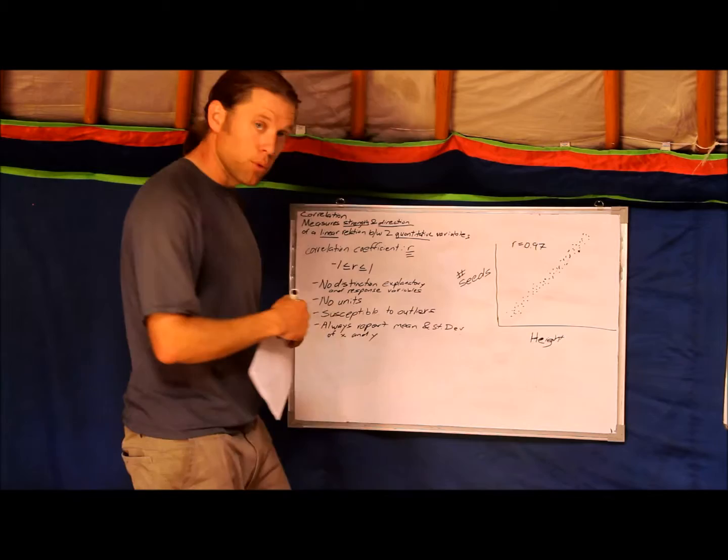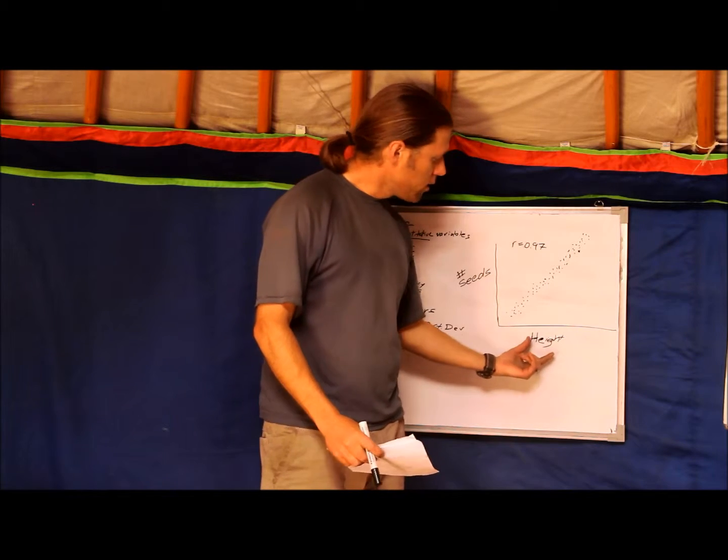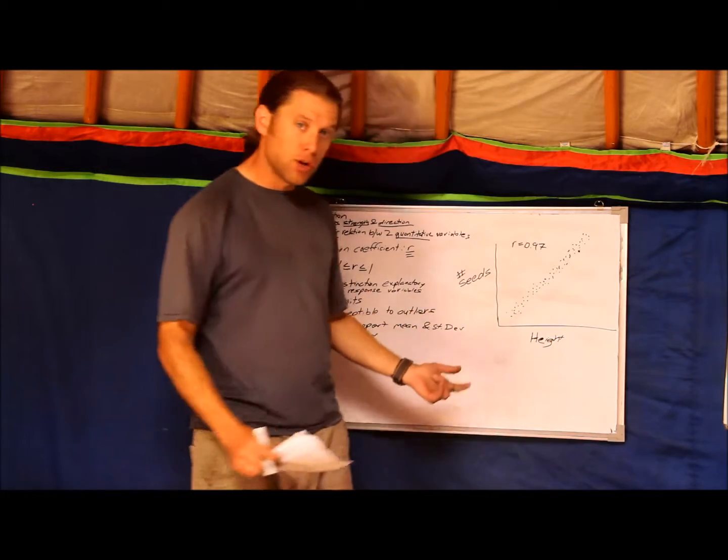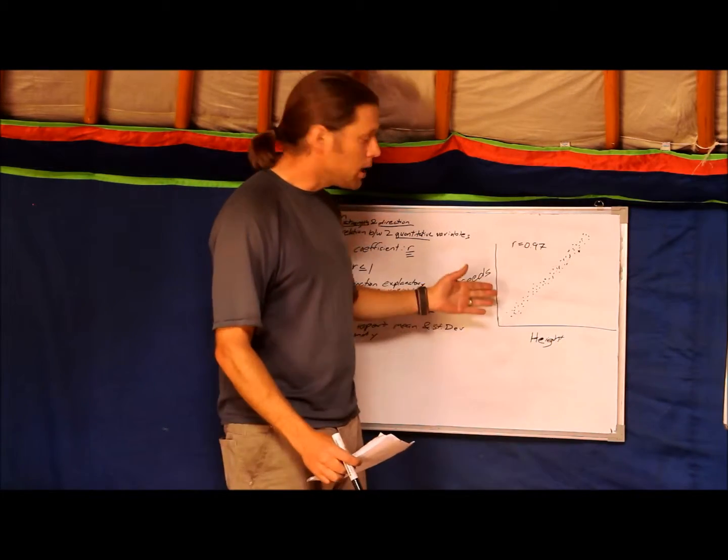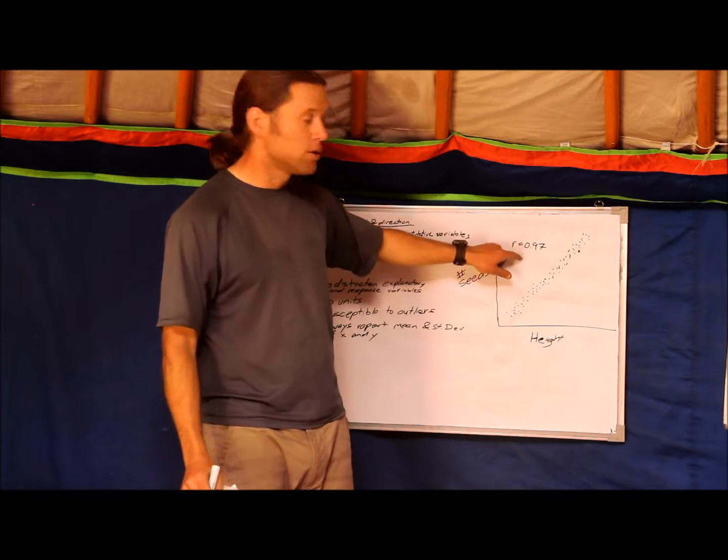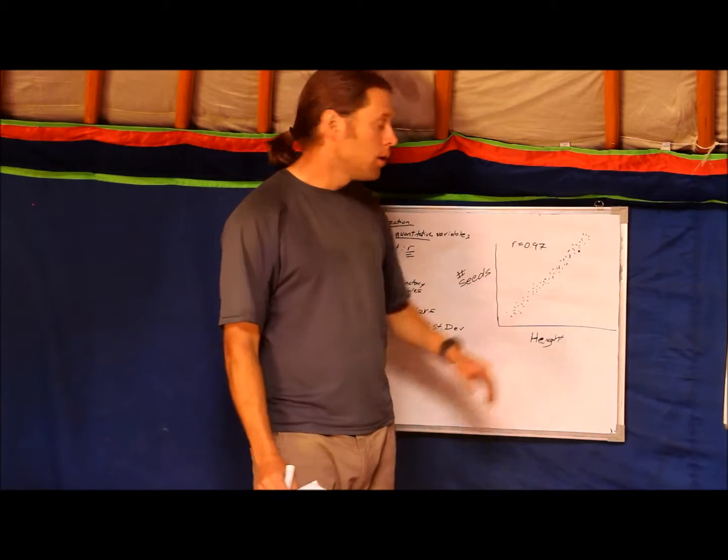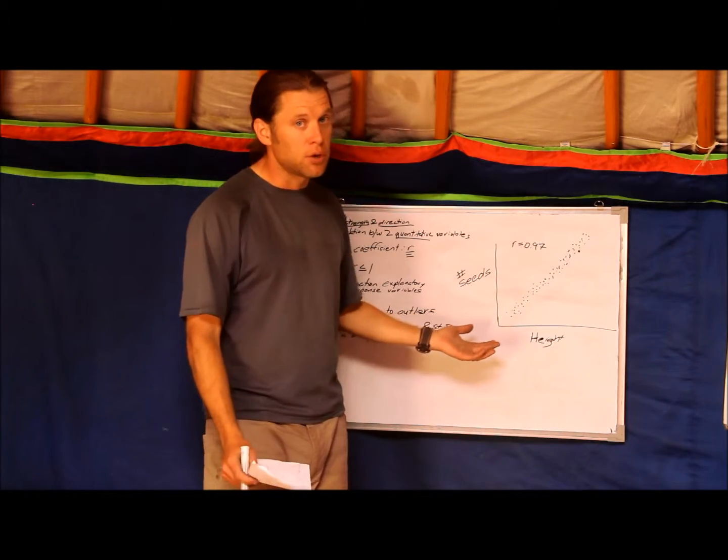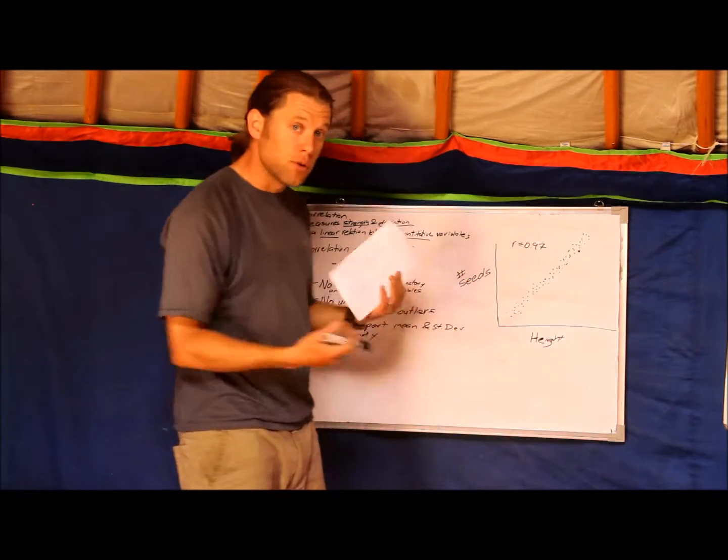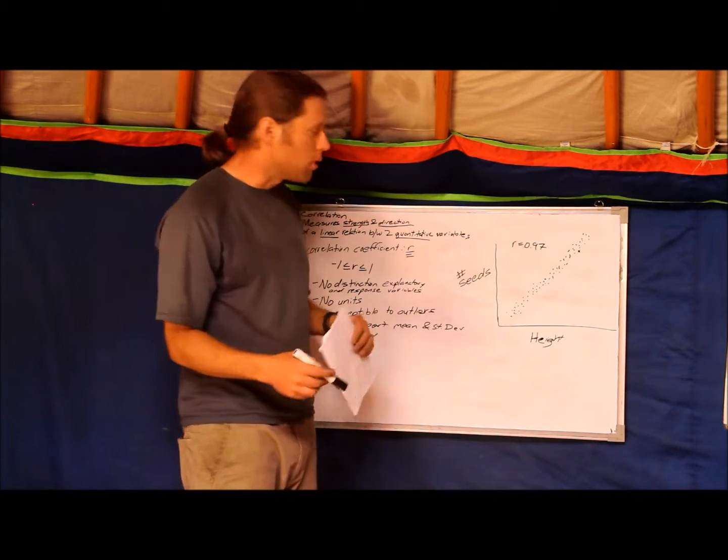In this example, you would say I measured 200 plants of this species, and their average height was 18 centimeters with a standard deviation of 4, and their number of seeds, the mean was 27 with a standard deviation of 7, and they had a correlation coefficient of 0.97. You always need to report the mean and standard deviation because that's fundamentally what correlation is measuring. It's measuring the variation in X and variation in Y and how they're related.